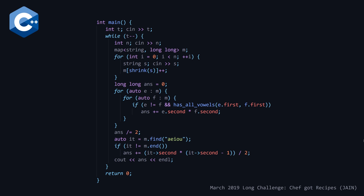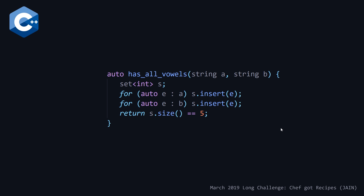Back in the main function, we calculate the number of meals the chef will like by initializing a long long answer to 0. We use a nested range-based for loop, looping through each pair of unique dishes, making sure we're not combining a dish with itself, and calling our hasAllVals function with the two unique dishes. This function takes strings a and b, declares a set, inserts all characters from both strings, and checks if the size equals 5 — returning true if all vowels are present.